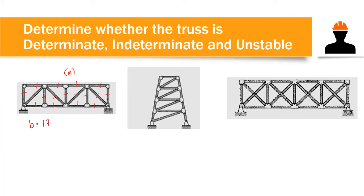The number of reactions: this support is hinged, giving 2 reactions, and the roller gives 1 reaction, for a total of 3 external reactions. Counting the number of joints, we have 10 joints.